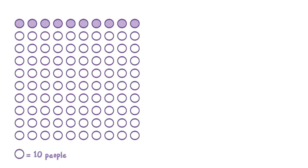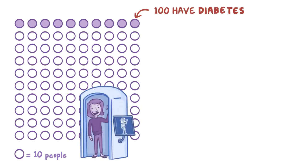So let's say that we recruit 1,000 people — 100 people who have diabetes and 900 people who don't — to put our diabetes test to the test.